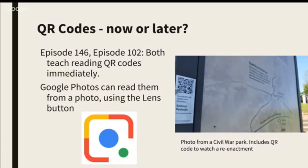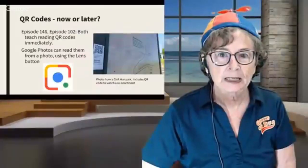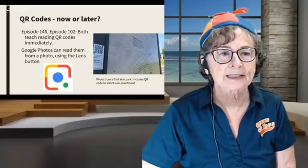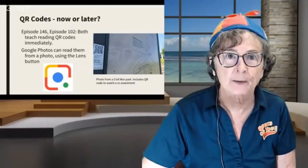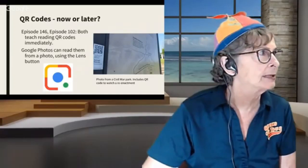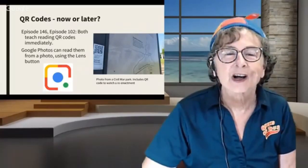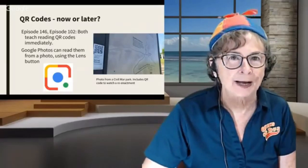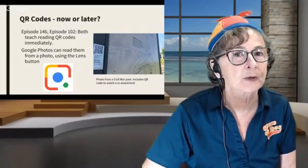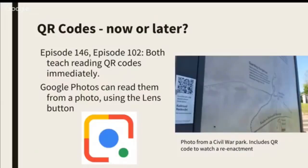But what if you don't have time to scan and see the results right away? Here's my example. See that sign? It was a billboard at a Civil War park in Mississippi a while ago. If you look closely, there's a QR code on it that says: scan this QR code to watch a video of the reenactment of the battle that took place here at Railroad Redoubt.